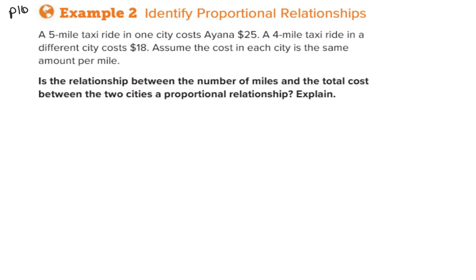Let's try this second example on your note page. It tells us a five mile taxi ride in one city costs IANA $25. And a four mile taxi ride in a different city costs $18. Assume the cost in each city is the same amount per mile. Is the relationship between the number of miles and the total cost between the two cities a proportional relationship? And then we're asked to explain our answer.